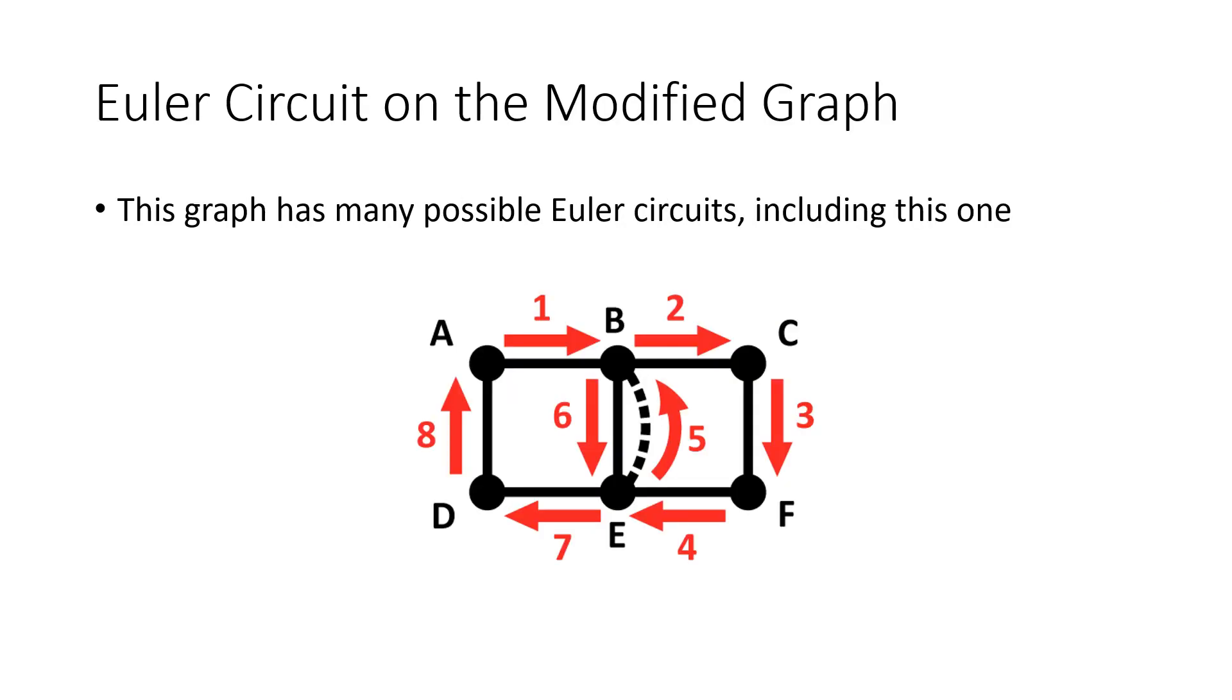And again, there's many possible solutions, including this one. And here's just an illustration of it that has the edges numbered so that you can tell the order. Again, another way that we can think about an Euler circuit is simply by listing the letters in order.